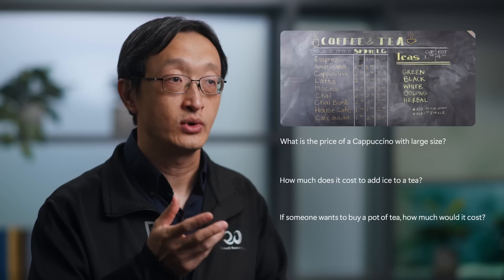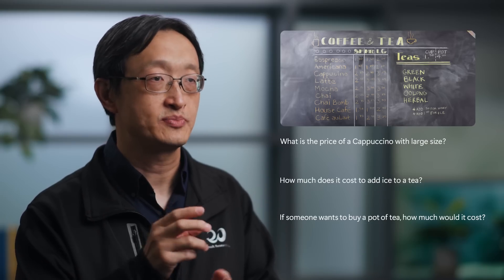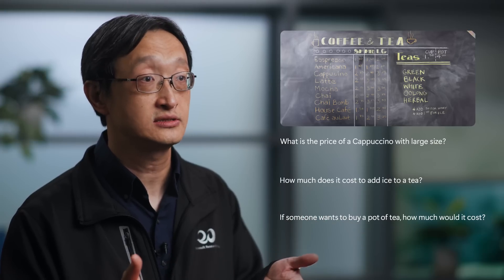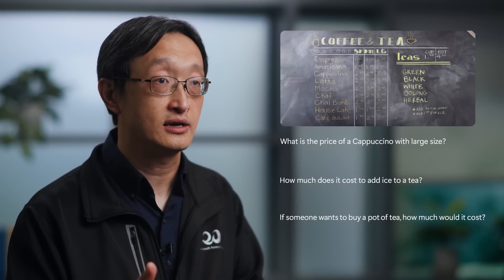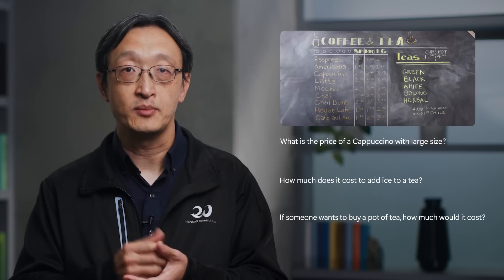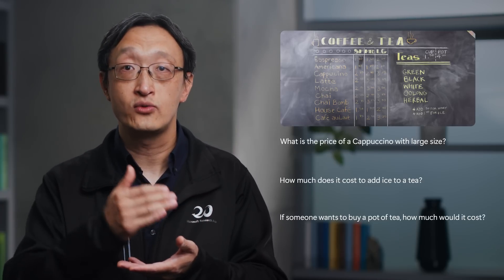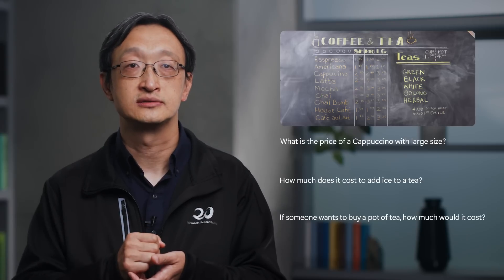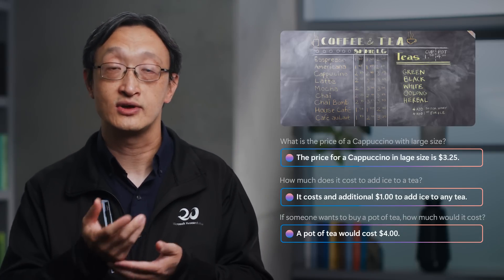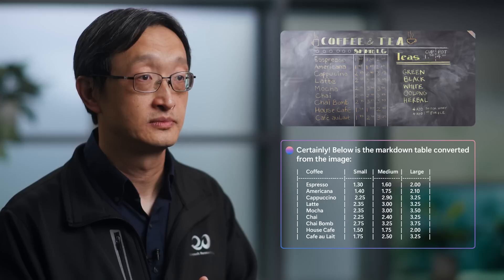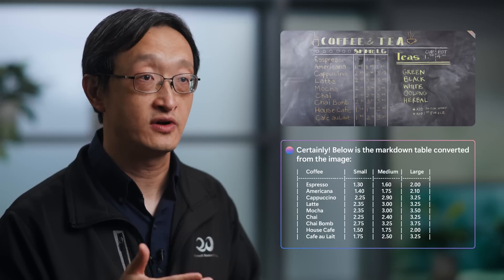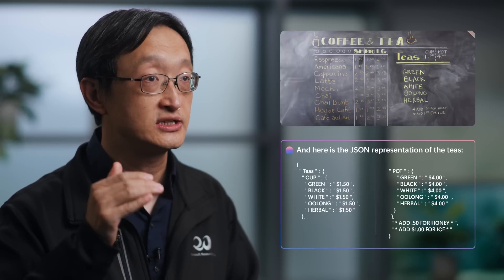As shown in this example, we present the model a coffee shop manual — which is by no means a high quality image — and ask questions such as: what is the price of a cappuccino with a larger size? How much does it cost to add ice to the tea? And if someone wants to buy a pot of tea, how much would it cost? The model produces correct answers by reasoning over relevant knowledge extracted from the image, such as the price is $3.25, it costs an additional $1 to add ice to any tea, and the pot of tea will cost $4. The model can also extract all the text from the image and generate a table using formats specified by users, such as a markdown table or JSON representation.